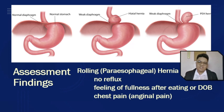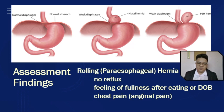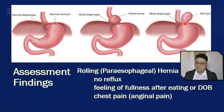For rolling or paraesophageal hernia, you would expect no reflux or minimal reflux compared to sliding hernia. The patient would complain of feeling of fullness after eating and would present with signs and symptoms of chest pain and anginal pain. What is dangerous in rolling or paraesophageal hernia is obstruction, strangulation, and possibly hemorrhage — because the diaphragmatic hiatus as a muscle may compress the blood flow going to that part of the stomach.